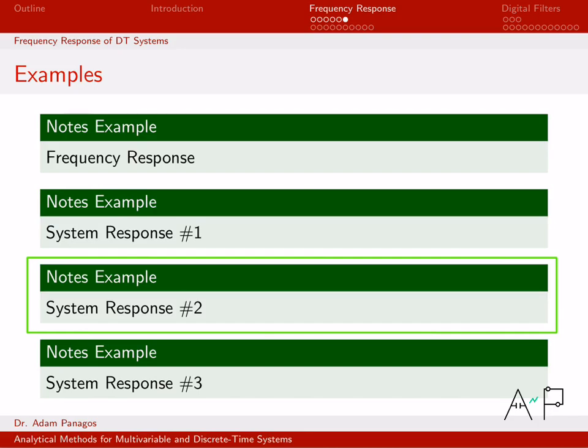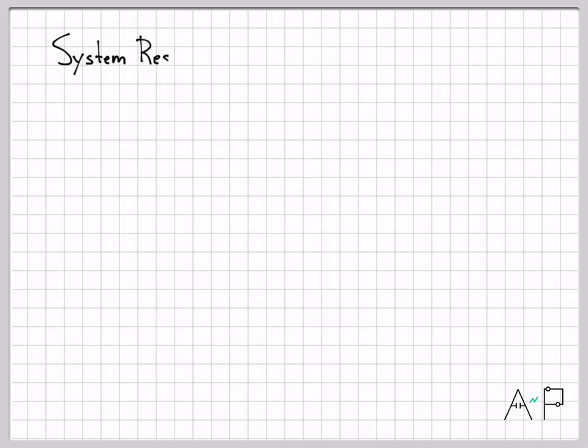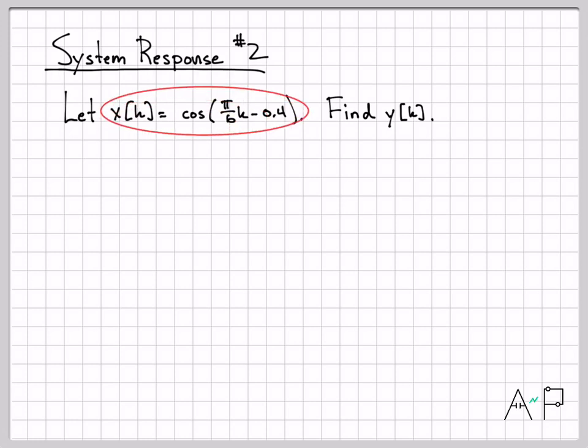Alright, that was the first example. Let's go ahead and work the next example. This one will actually deal with a slightly more interesting signal. This is a cosine that is oscillating at a specific frequency. Our goal is the same though, given this input into the same system we've been considering, find the output y of k.